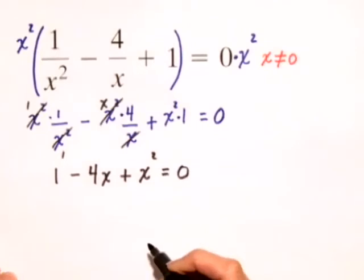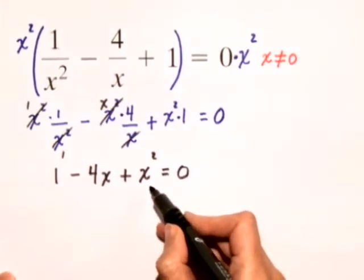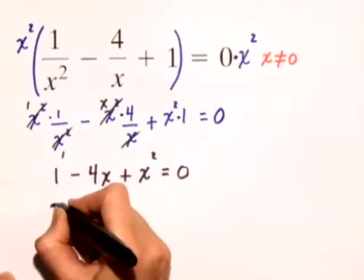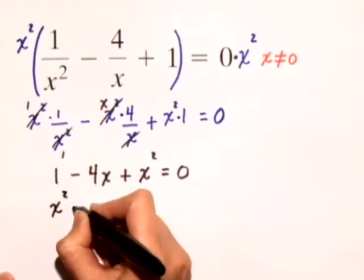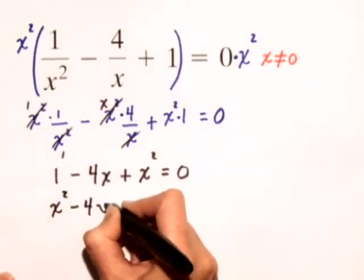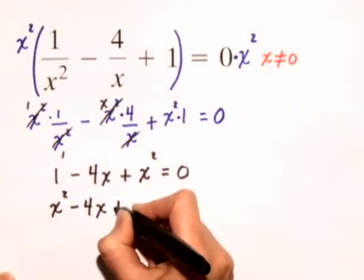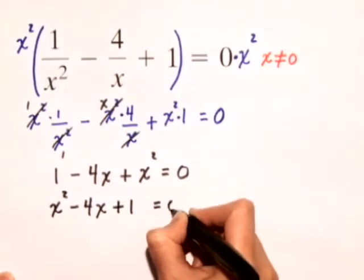So we have a quadratic equation, but it's not in standard form because it's not in descending order. So let's rewrite it with the x squared term first. So I'll have x squared, then my linear term, minus 4x, and then the constant, plus 1, is equal to 0.